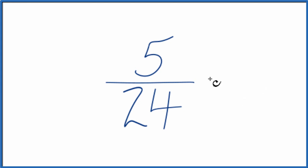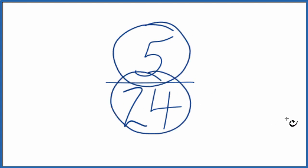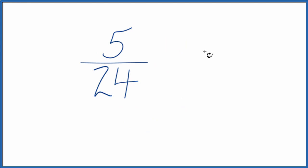To do that, we need to find a common factor, something that goes into 5 and 24 evenly. So these are the factors for 5 and 24.